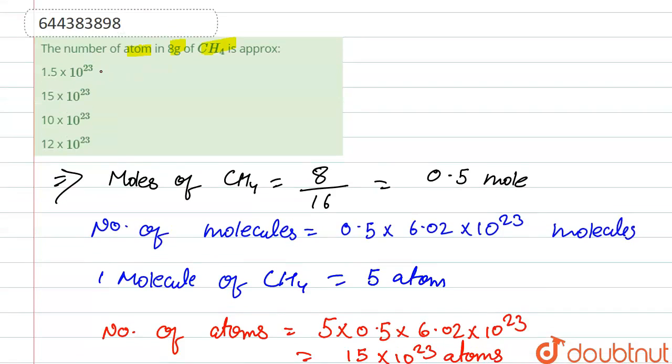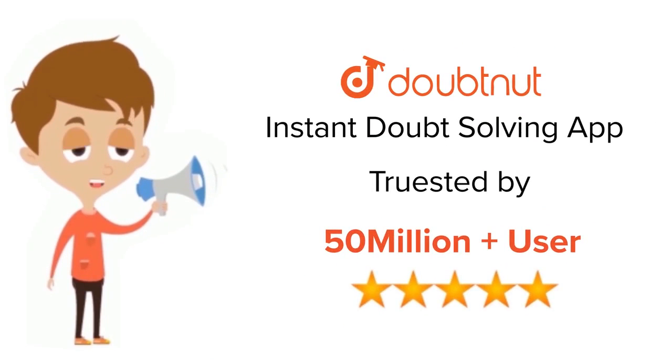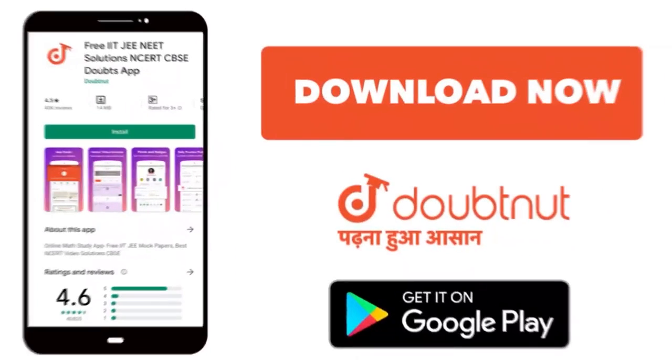So there are 15 into 10 to the power 23 atoms in 8 gram of CH4. So our correct option is option second. Thank you. For class 6th to 12th, IIT-JEE and NEET level, trusted by more than 5 crore students, download Doubtnet app today.